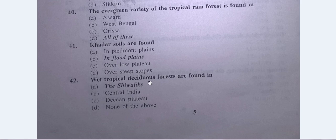Question No. 42: Wet tropical deciduous forests are found in — A. the Shivaliks, B. Central India, C. Deccan Plateau, D. None of the above. The answer is A — the Shivaliks.